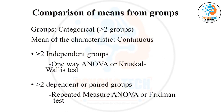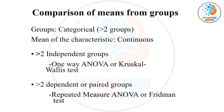If there are more than two categories and the data are normally distributed, use one-way ANOVA. If not normally distributed, use the Kruskal-Wallis test. There are only six things to remember. If it is more than two groups with continuous data: one-way ANOVA. Non-parametric data: Kruskal-Wallis. If paired with more than two groups: repeated measures ANOVA or Friedman's test.